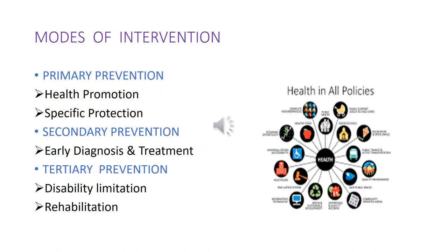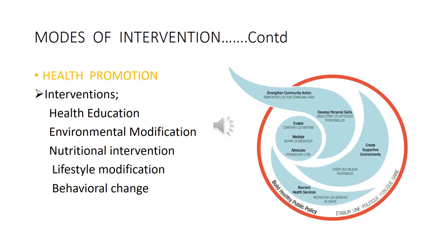Having discussed the different levels of prevention, we now look at modes of intervention. There are five modes of intervention which can be done at different levels of prevention. Intervention is defined as any attempt to interrupt the usual sequence in which disease develops in man. In primary prevention, you do health promotion and specific protection. In secondary prevention, you do early diagnosis and give proper treatment. In tertiary prevention, you try to limit disability and rehabilitate the person.